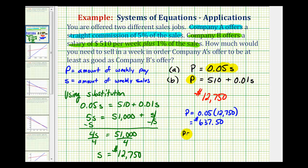And then for the pay from company B, it's going to be $510 plus 0.01 times 12,750. And this is the same amount. This is going to be $637.50.